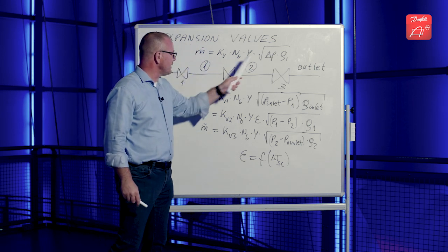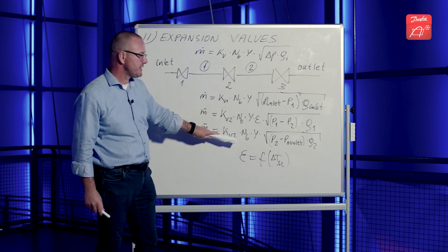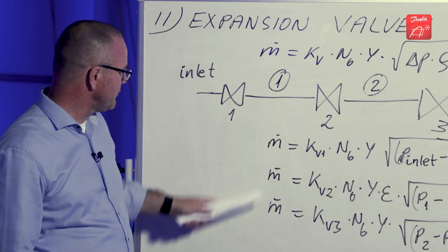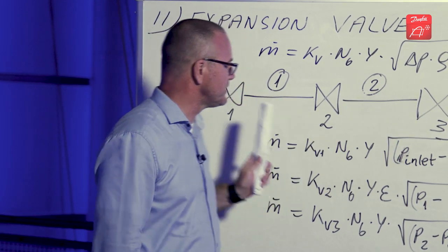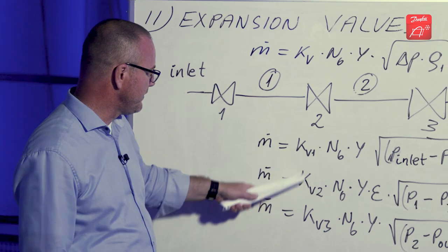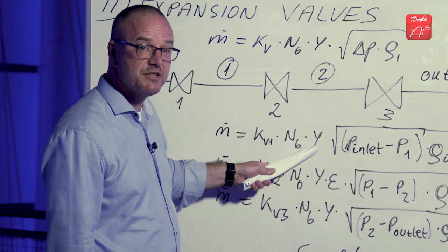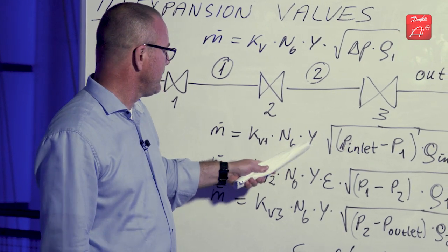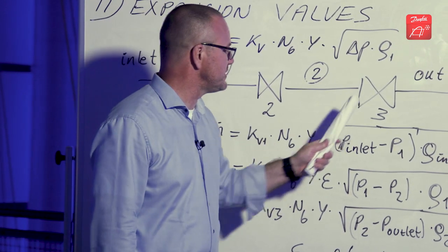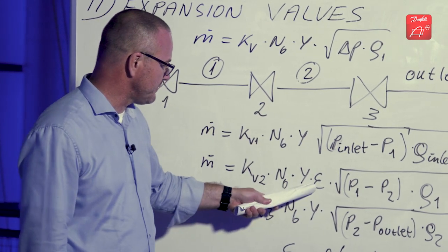But instead of having one equation, we now have three equations and we need to be able to solve this equation set. The mass flow we know because it's the same through all valves and it's normally given. The KV values we know. This constant we know. The net expansion factor. As we are approaching real situations, we normally just put that to one.